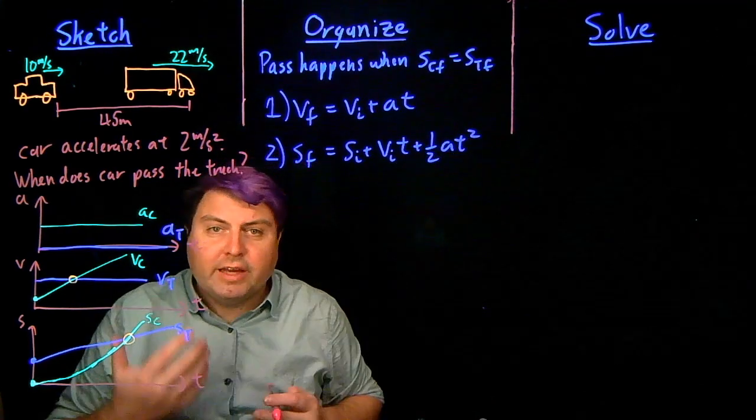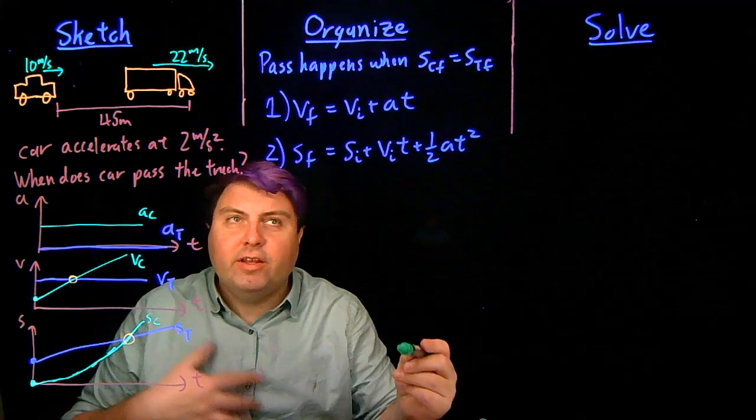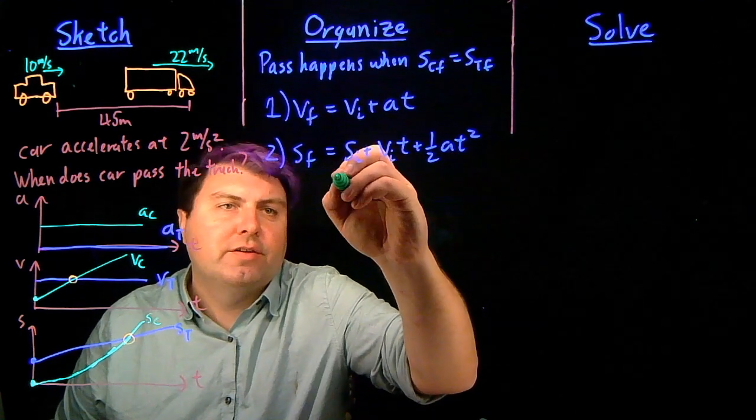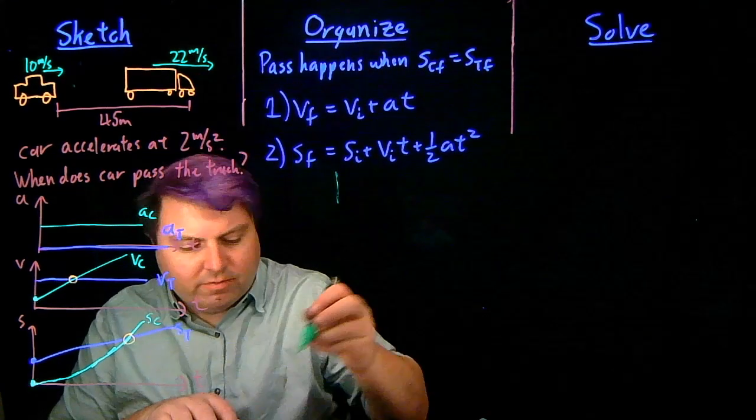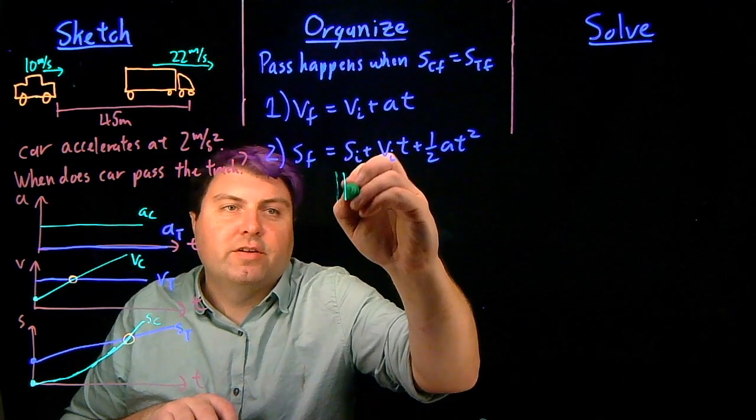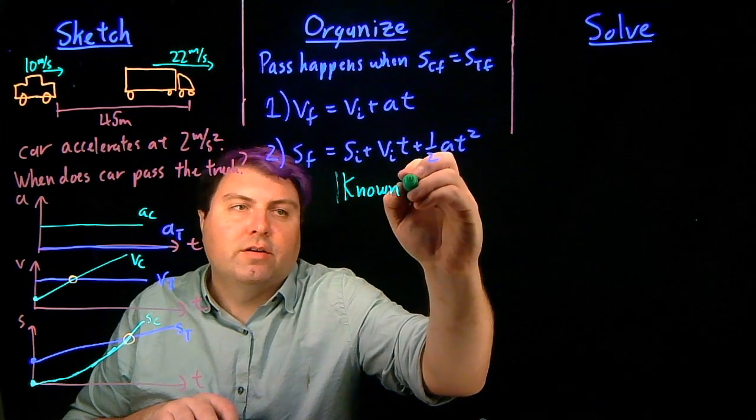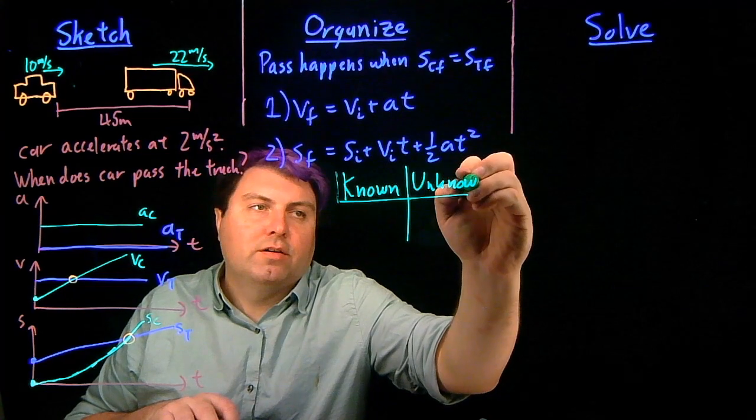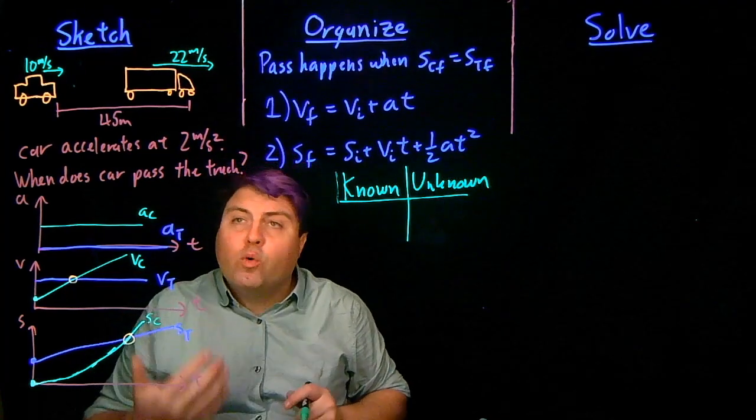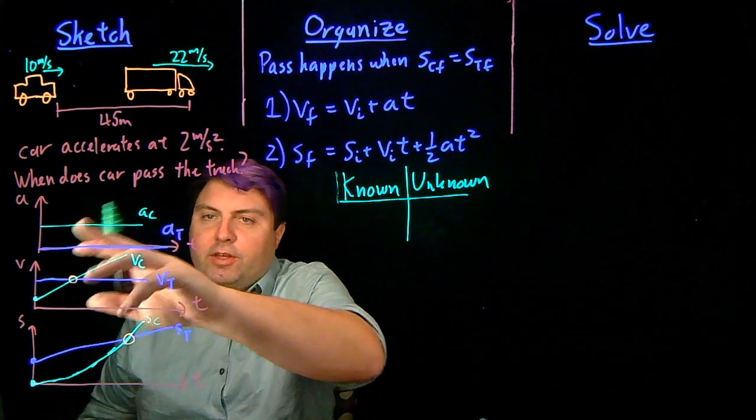Well, having this, now we can start in our organized by writing down our knowns and unknowns. So what do we know in this case? Well, we know the accelerations. We know the acceleration of the truck is zero.